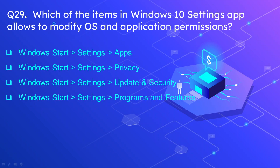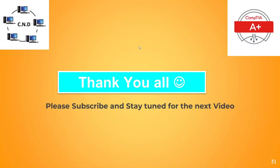Question number 29: Which of the items in the Windows 10 Settings app allows you to modify OS and application permissions? The correct option is Windows Start, then Settings, then Privacy. That's all for today. I hope you have learned something from today's video. If you haven't subscribed yet, please subscribe and stay tuned for the next video. Thank you.